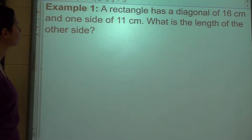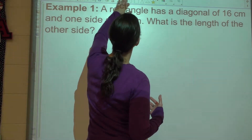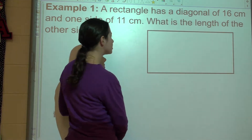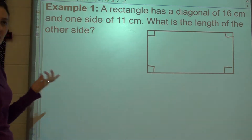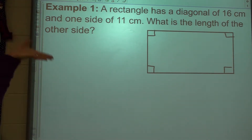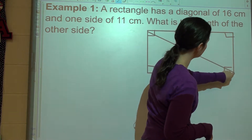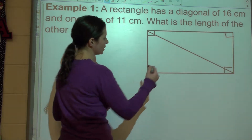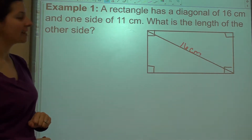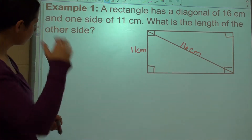Let's take a look at a few examples. For example one: a rectangle has a diagonal of 16 centimeters and one side of 11 centimeters — what is the length of the other side? We always want to draw a picture for a word problem. Since we're studying quadrilaterals, we know rectangles have all right angles. A diagonal is a line that goes from one angle in a polygon to another angle that is not a side. The diagonal is 16 centimeters and one of the sides is 11 centimeters. We need to find the length of the other side.